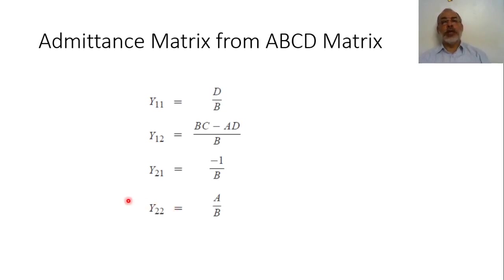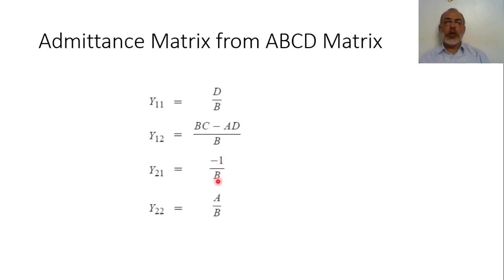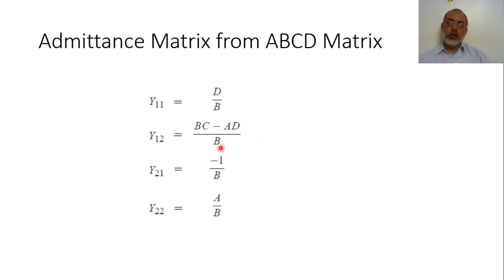If you are interested in obtaining the admittance matrix from the ABCD parameters: Y11 = D/B. Y12 = (BC − AD)/B. Y21 = −1/B. It should be noted that if the network is reciprocal, BC − AD = −1, so Y12 equals Y21. And Y22 = A/B. The denominator in all cases is B.